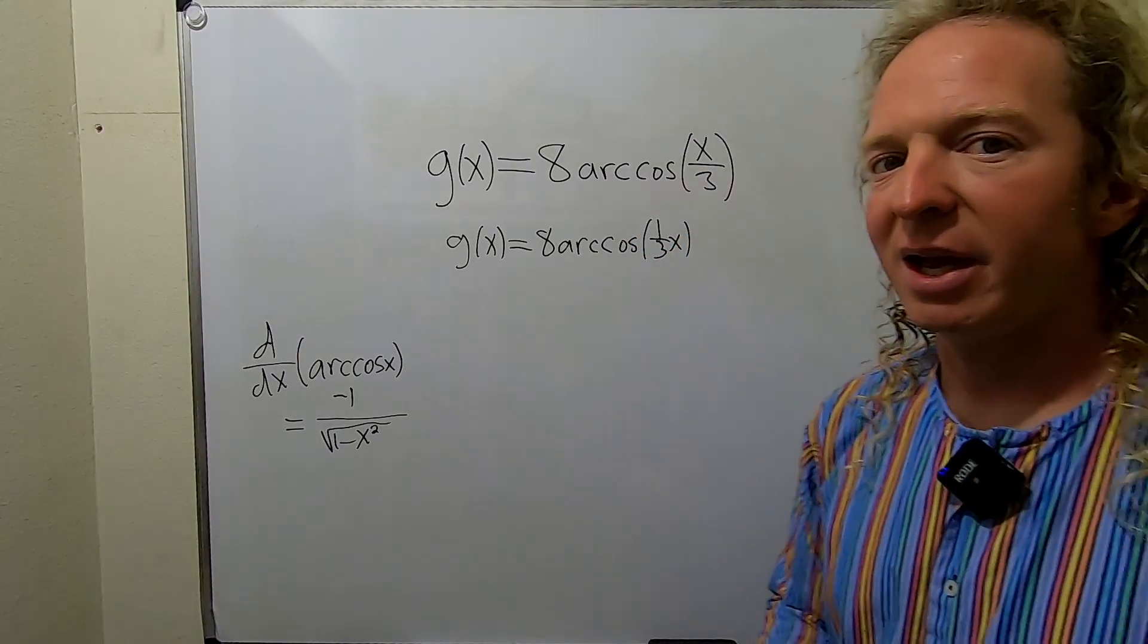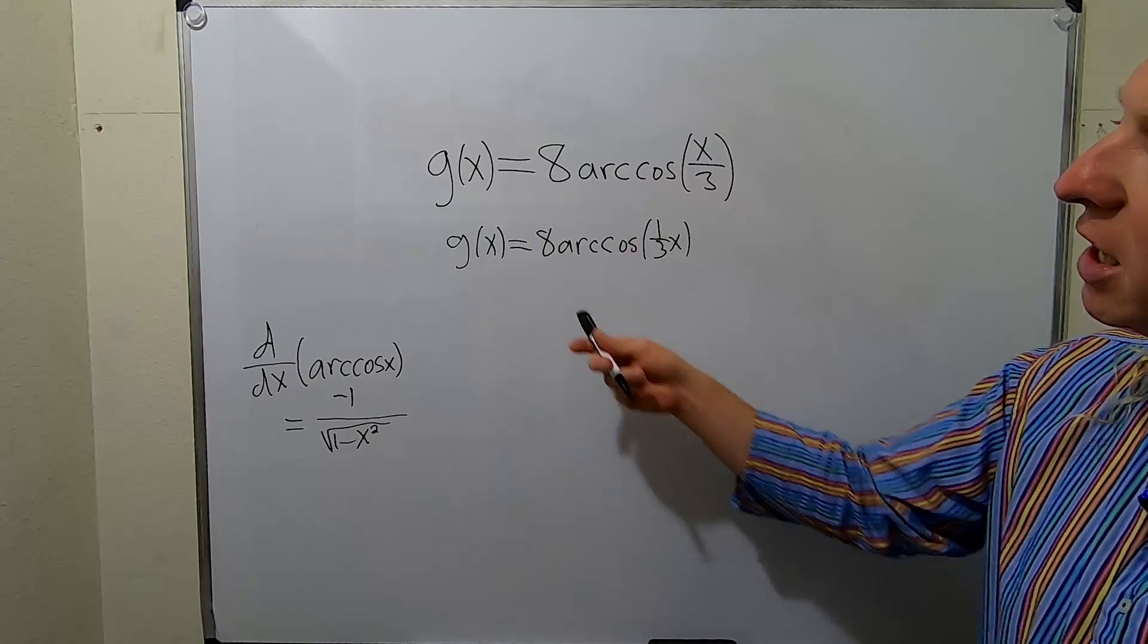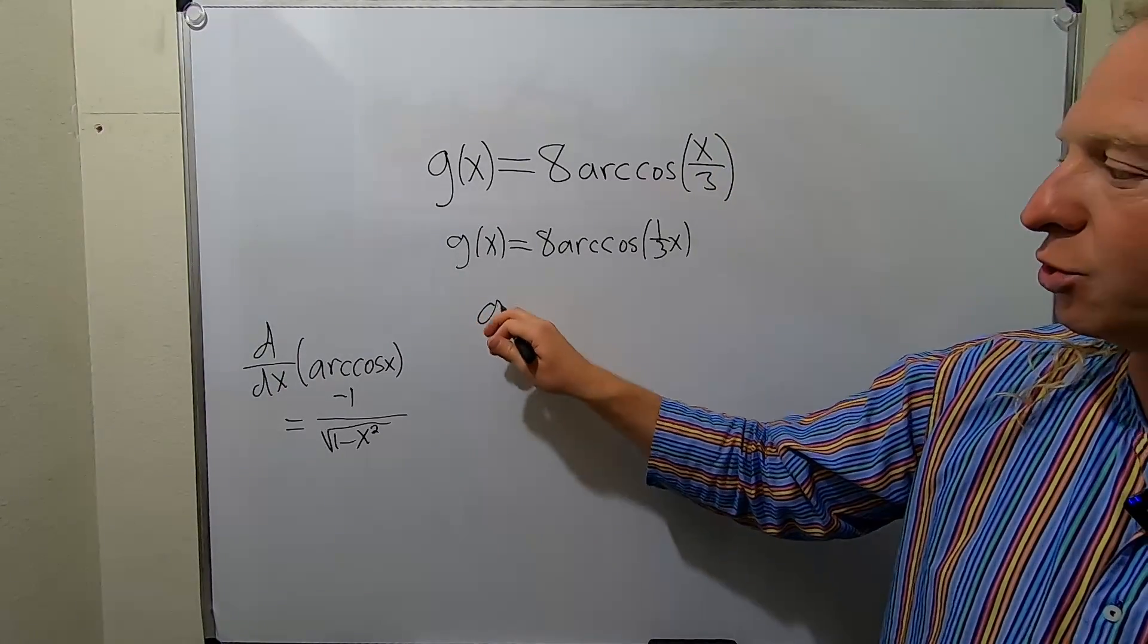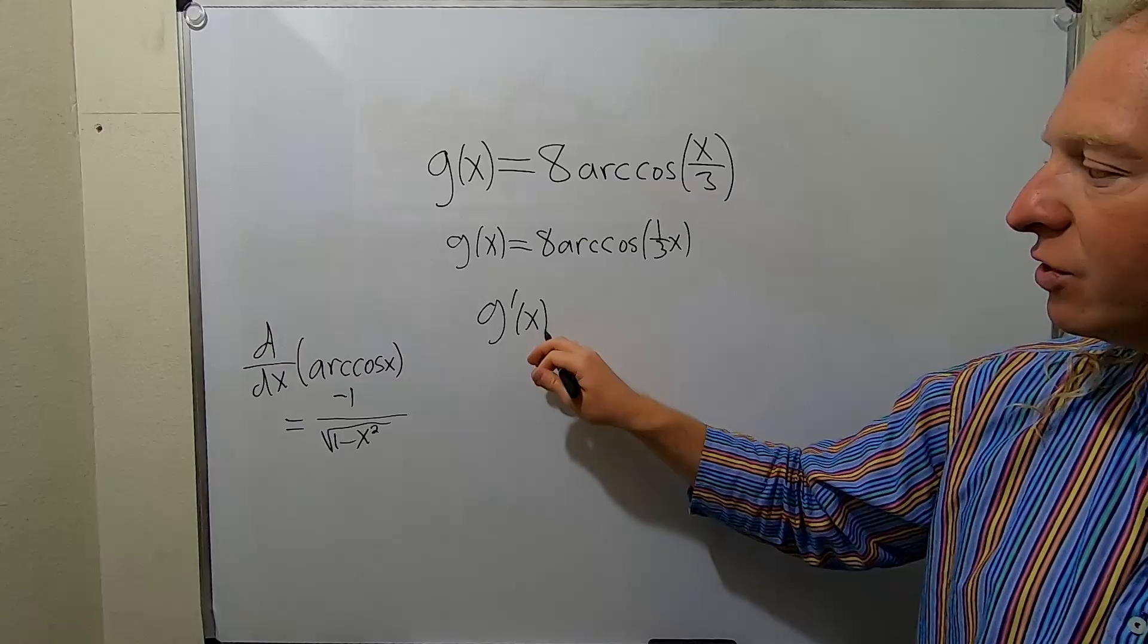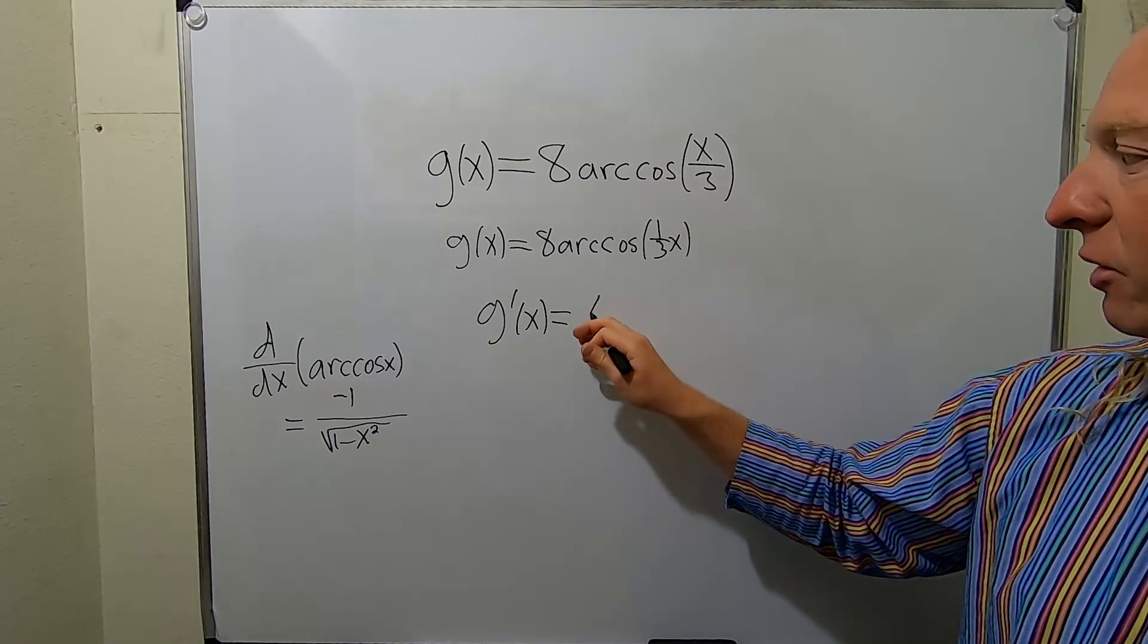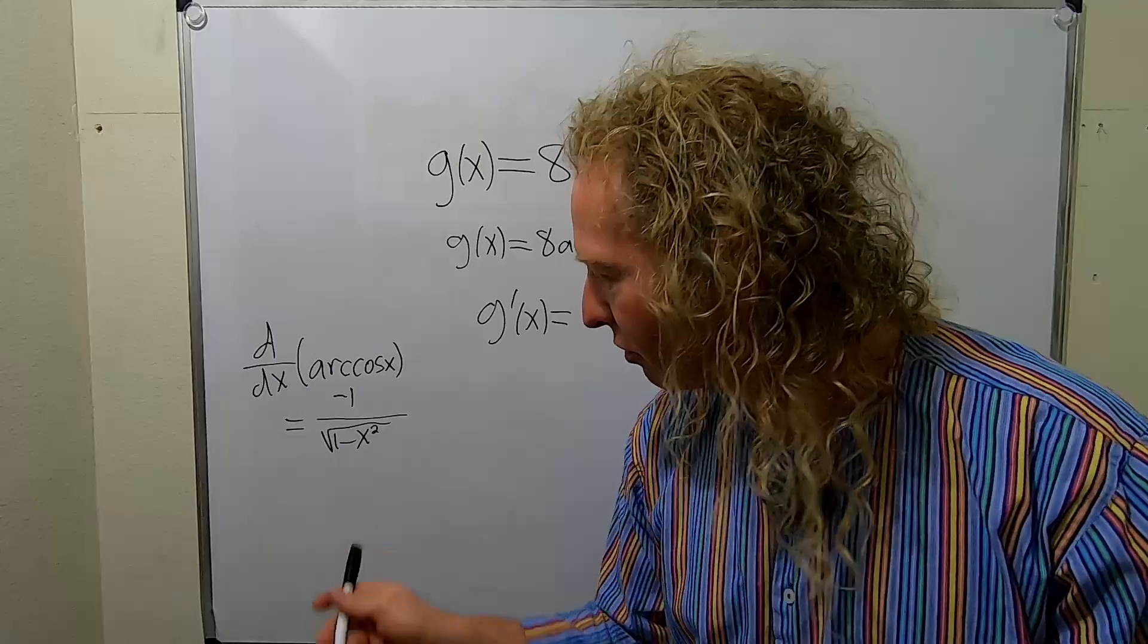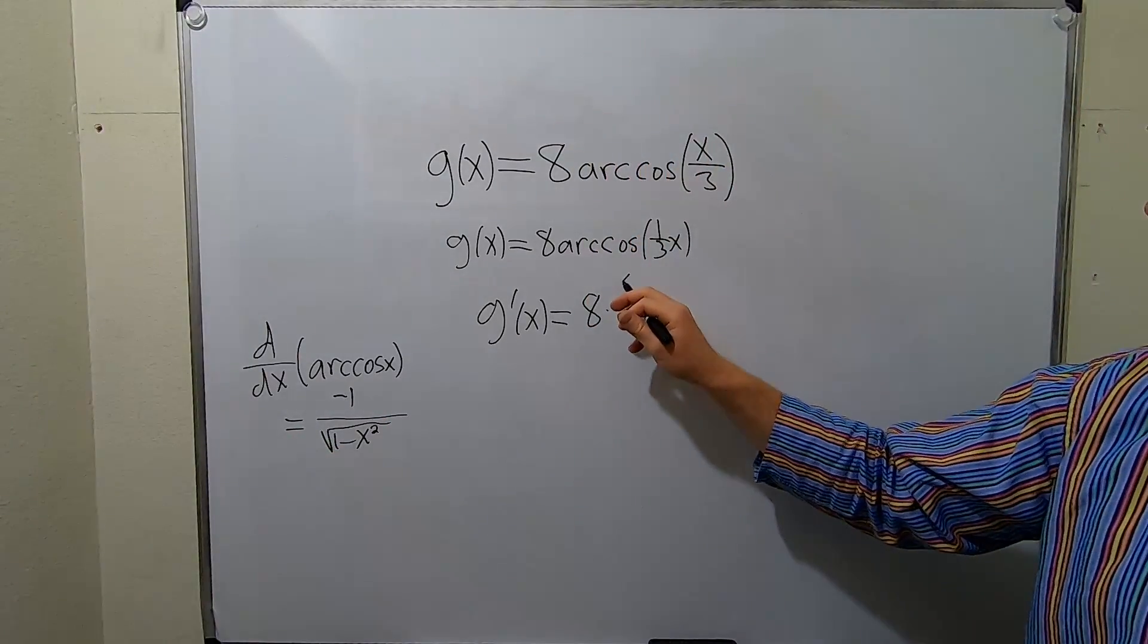Now let's go ahead and apply the derivative. The 8 is a constant, so it just kind of hangs out. So g prime of x is equal to... So the 8 hangs out, I'll leave it over here times the derivative of arc cosine. So we know this is the formula. So I'll put it in parentheses here.